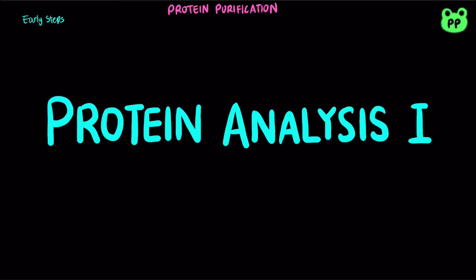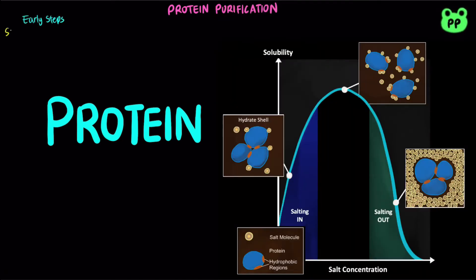Two of the early steps include salting out and dialysis. Salting out separates proteins based on their solubility, which is a complex function of pH, temperature, salt concentration, and other factors. The addition of certain salts such as ammonium sulfate can selectively precipitate some proteins, while others remain in solution.